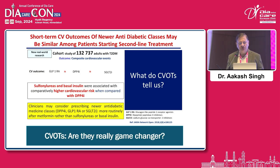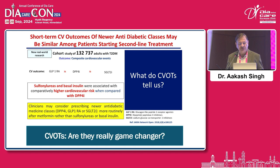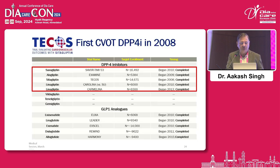If we see the short-term CV outcomes of newer anti-diabetic classes, they may be similar among patients starting second-line treatments. CV outcomes were compared across GLP-1 receptor agonists, DPP-4 inhibitors, SGLT-2 inhibitors, and other drugs. It was shown that sulfonylureas and basal insulin were associated with comparatively higher cardiovascular risk when compared to DPP-4 inhibitors.